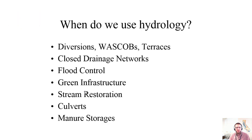What are some of the BMPs that need hydrology studies? We've got diversions, WASCOBs, terraces — all agricultural practices. Closed drainage networks are typically in urban areas. Flood control can be both. Green infrastructure practices are typically urban, stream restoration is typically rural, culverts, and manure storages. Some of these practices only require peak flow rates and others require you to know the entire storm volume.